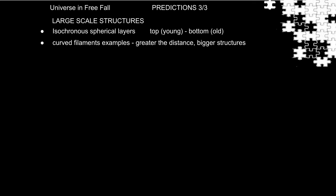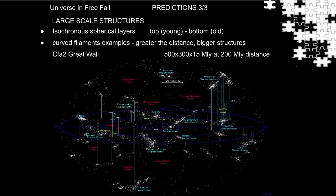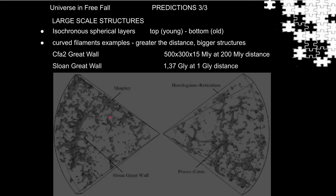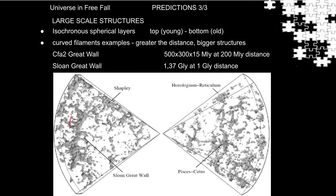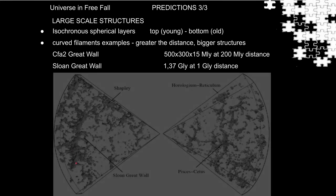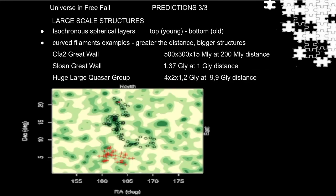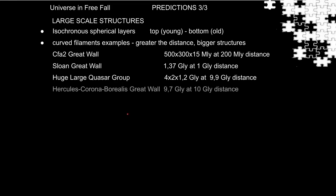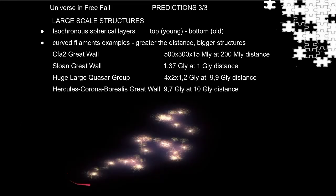A few examples. CFA2 Great Wall at 2 million light years. The Sloan Great Wall, 1 billion light years away. The huge large quasar group at 9.9 billion light years distance. And Hercules Corona Borealis Great Wall at 10 billion light years. These are all a few examples of a long list of large structures that support the universe in free-fall model.